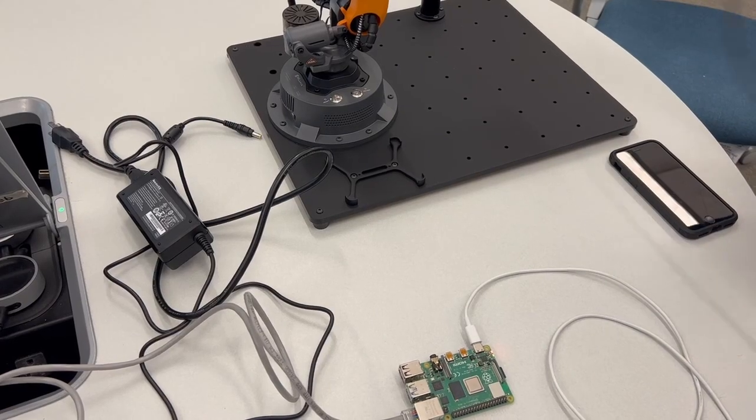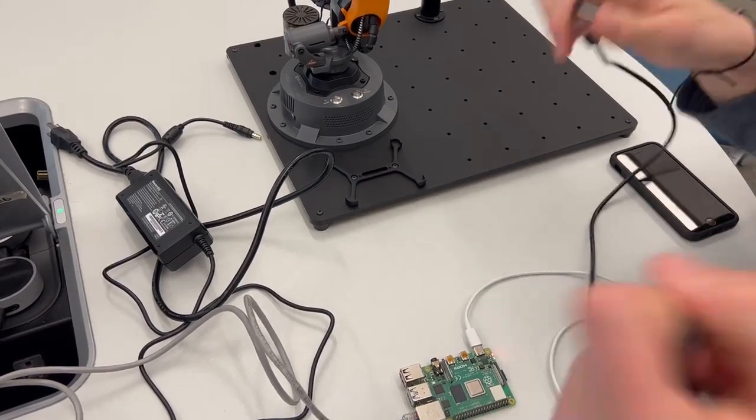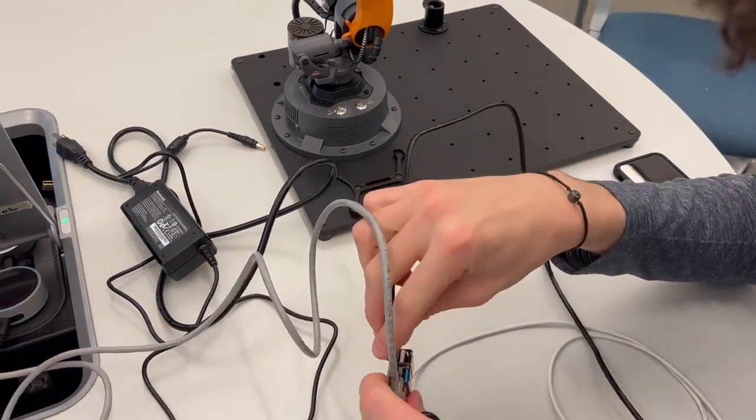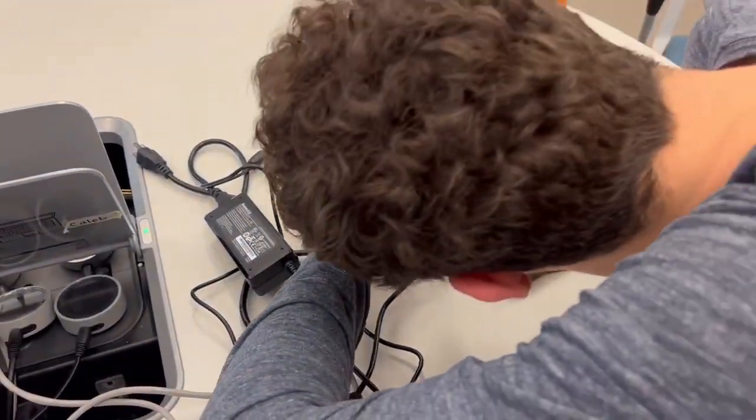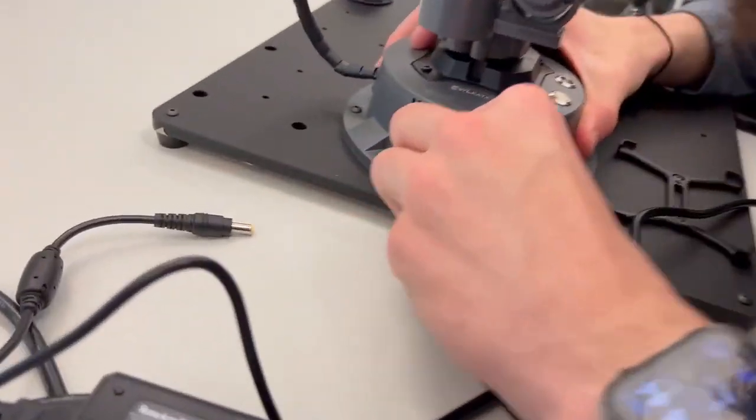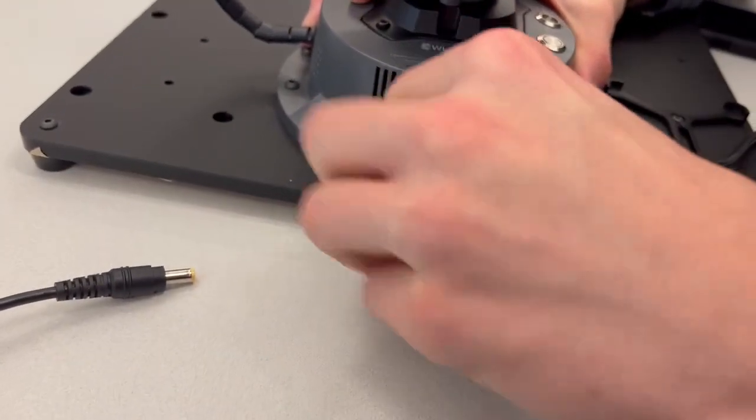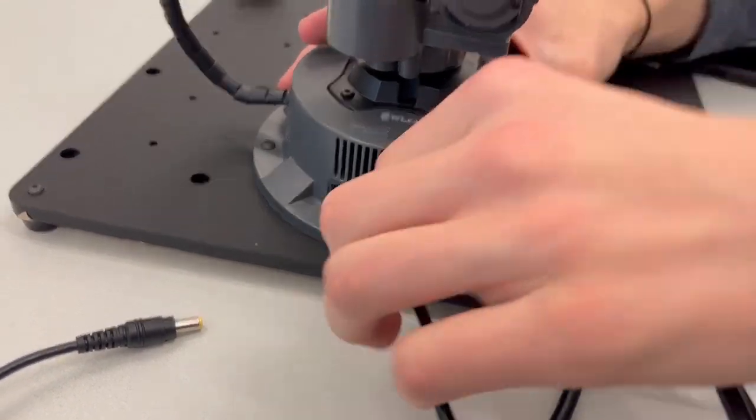And then lastly we just want to plug the—well, not lastly I guess—we're going to plug the Pi into the robot arm. So we're going to use USB here, and this is the power cord of the robot which goes in the back. And then obviously you need to plug the robot in.